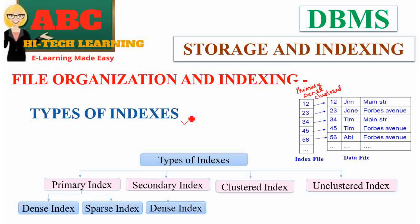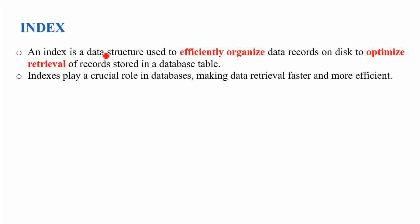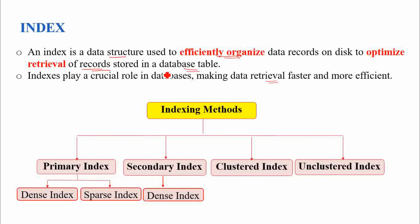Hello students, in this video we are going to learn about indexes and its types. An index is a data structure used to efficiently organize data records on disk in order to optimize retrieval of records stored in a database table. Indexes play a crucial role in databases, helping to make data retrieval faster and more efficient. Indexing methods can be classified into primary index, secondary index, clustered, unclustered, dense, and sparse index. We are going to discuss all these methods with suitable examples.